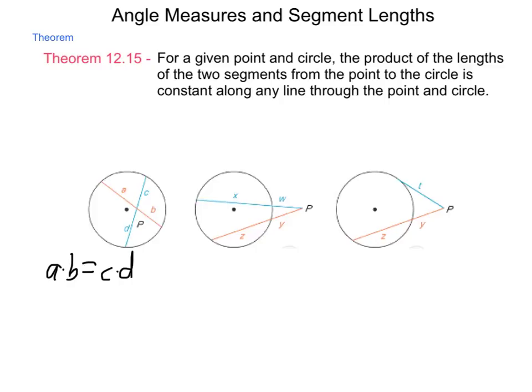In our second case, if the point is outside forming two intersecting lines that are not tangent, what we get is that W plus X times W will equal Y plus Z times Y. So the product of these intersections times the entire segment. That segment is called a secant.